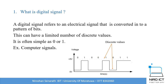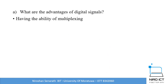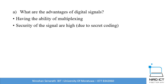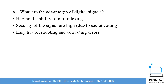When we learn digital signals, we have to think about their advantages and disadvantages. One advantage is the ability of multiplexing — when transmitting data with digital signals, we can do multiplexing. Security is also high compared to analog signals, because when transmitting data using digital signals we can use secret coding. Also, when transmitting data from one place to another, if errors occur, digital signals make it easy to troubleshoot and correct those errors.